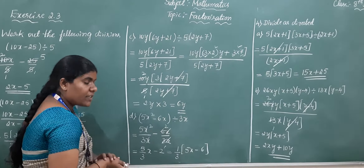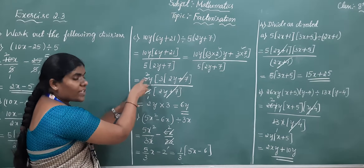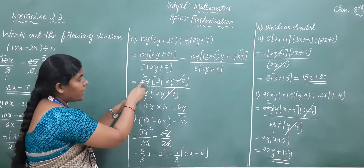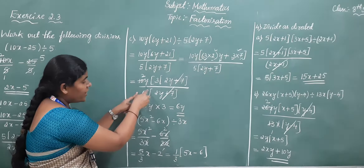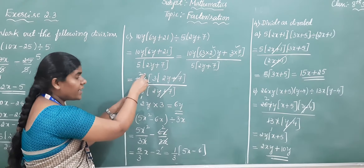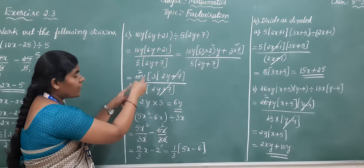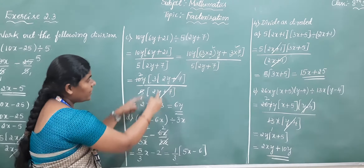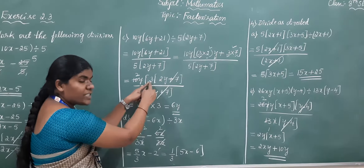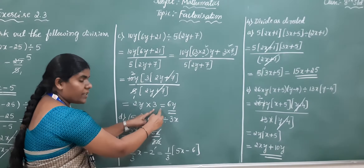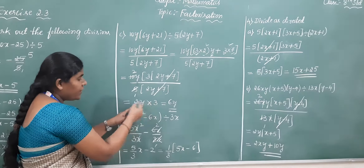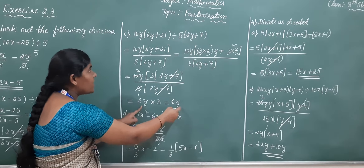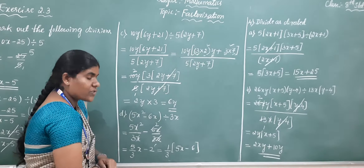After cancelling (2y plus 7), also cancel 5 with 10 using the 5 times table — 5 twos are 10, leaving 2. The remaining terms are 2 into y and 3. Multiply: 3 twos are 6 into y. So 6y is the final answer to this question.